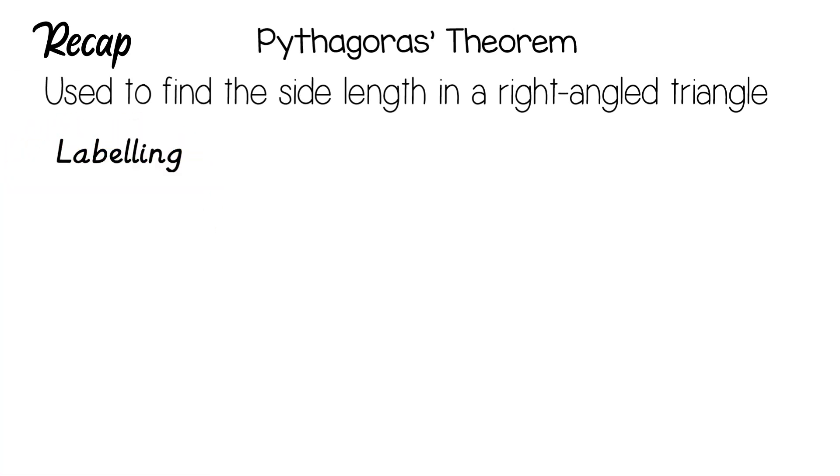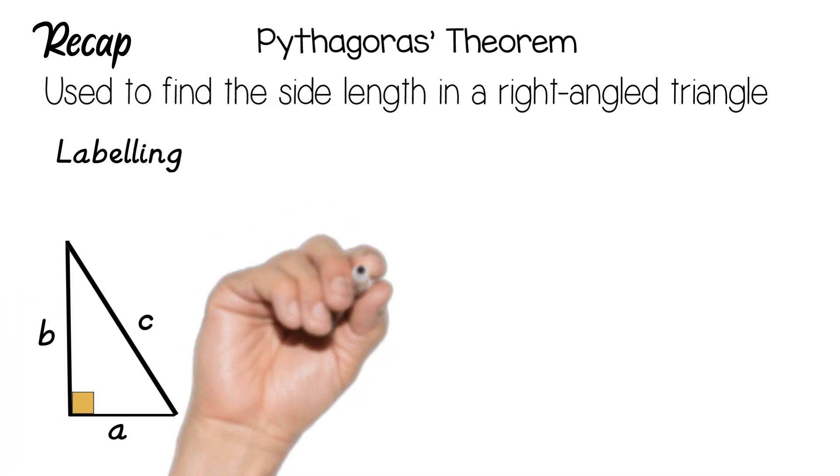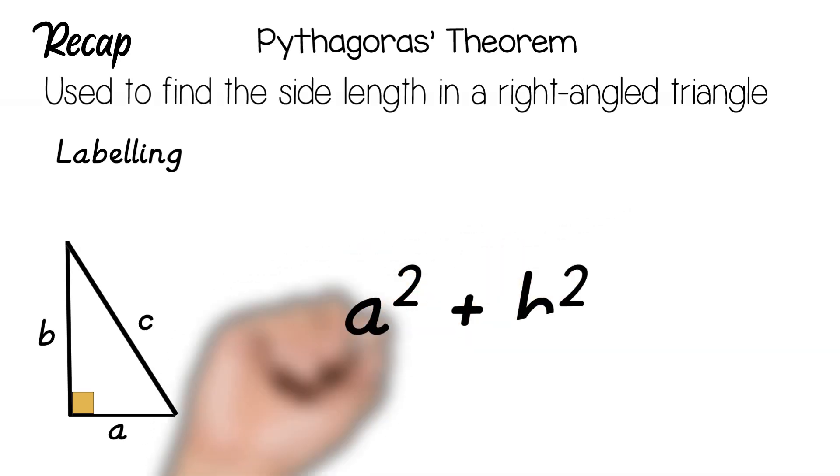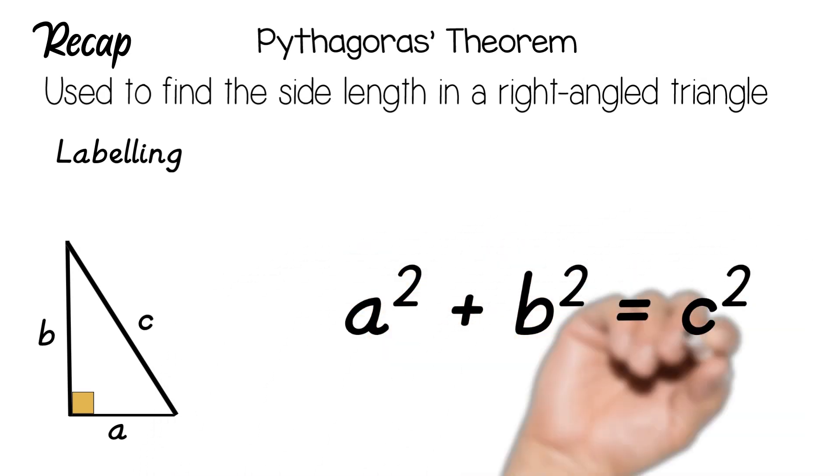First thing you need to be able to do is to label this triangle. It's so important that the hypotenuse is labeled correctly - that has to be C. The other two can be A or B, it doesn't matter, as long as your hypotenuse is C. The second thing is knowing what the actual Pythagoras theorem is, so it's a² + b² = c².